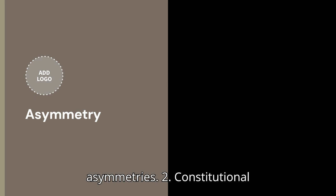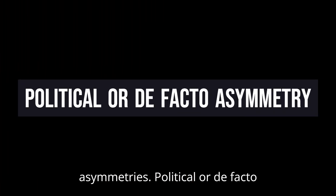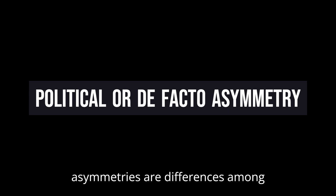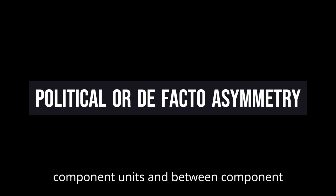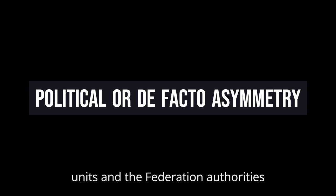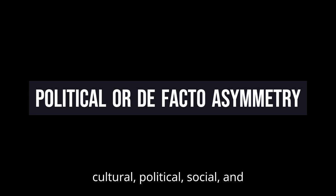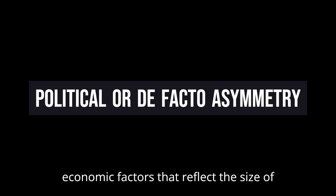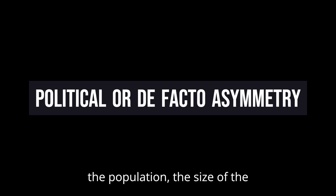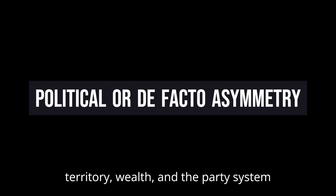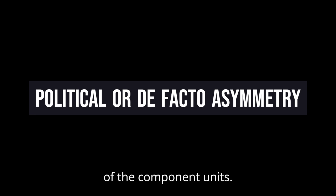Asymmetries appear in two forms: (1) Political or de facto asymmetries, and (2) Constitutional or de jure asymmetries. Political or de facto asymmetries are differences among component units and between component units and the federation authorities, based on ethnic, religious, linguistic, cultural, political, social, and economic factors that reflect the size of the population, the size of the territory, wealth, and the party system of the component units.